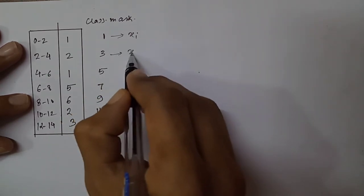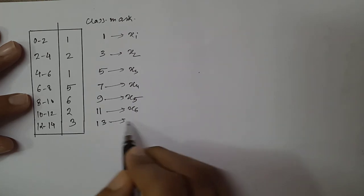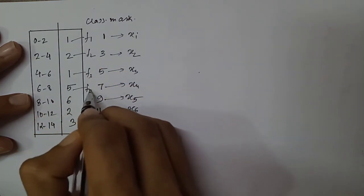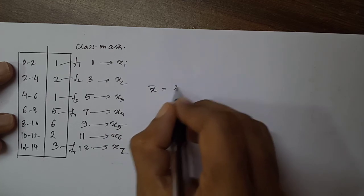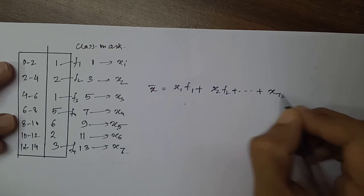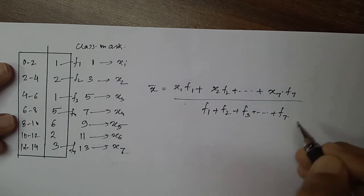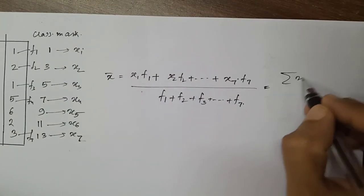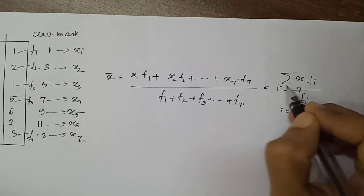These class marks are labeled x1, x2, x3, x4, x5, x6, and x7. Similarly, the frequencies are labeled f1, f2, f3, f4 up to f7. The mean formula is: x-bar equals x1·f1 + x2·f2 + ... + x7·f7, divided by f1 + f2 + ... + f7. This is the standard formula: summation of xi·fi divided by summation of fi, where i goes from 1 to 7.